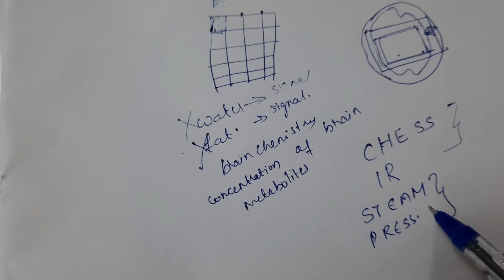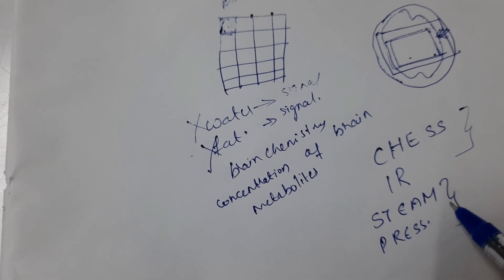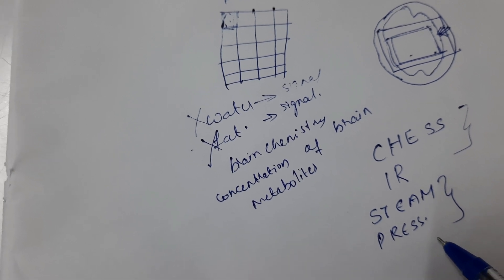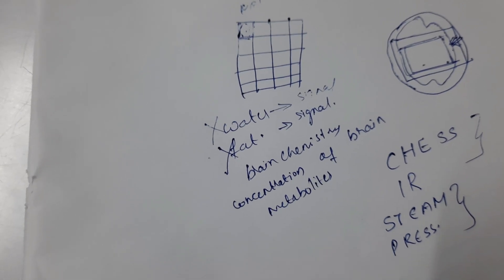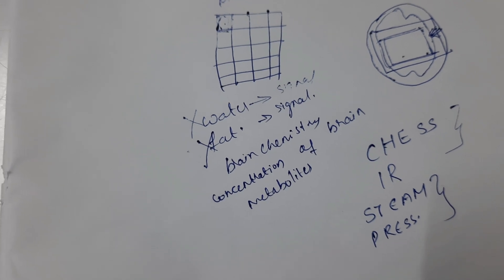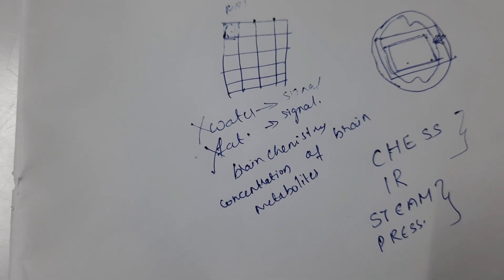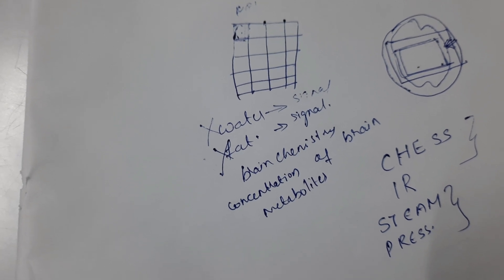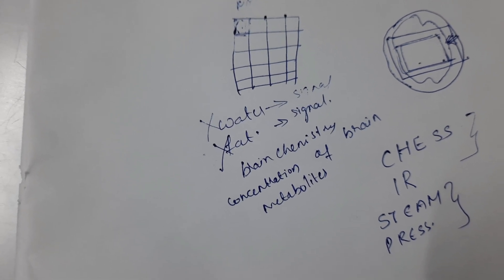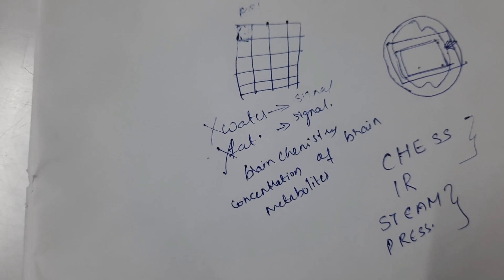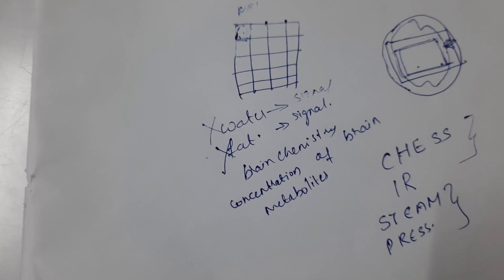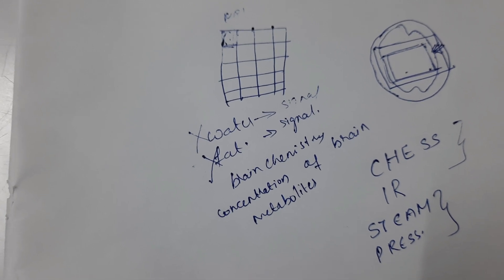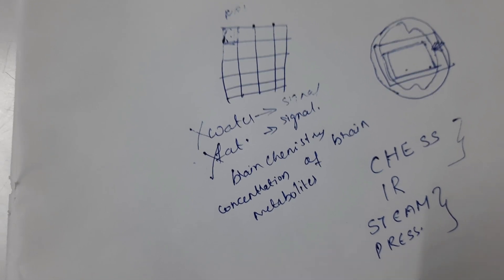The expansion of STEAM is Stimulated Echo Acquisition Mode and the expansion of PRESS is Point Resolved Spectroscopy. These two pulse sequences are used along with the water suppression technique in order to eliminate the signals from water. For spectroscopic imaging, we use two types of gradients: slice selection gradient and phase encoding gradient. We do not use a frequency encoding gradient in MR spectroscopy.